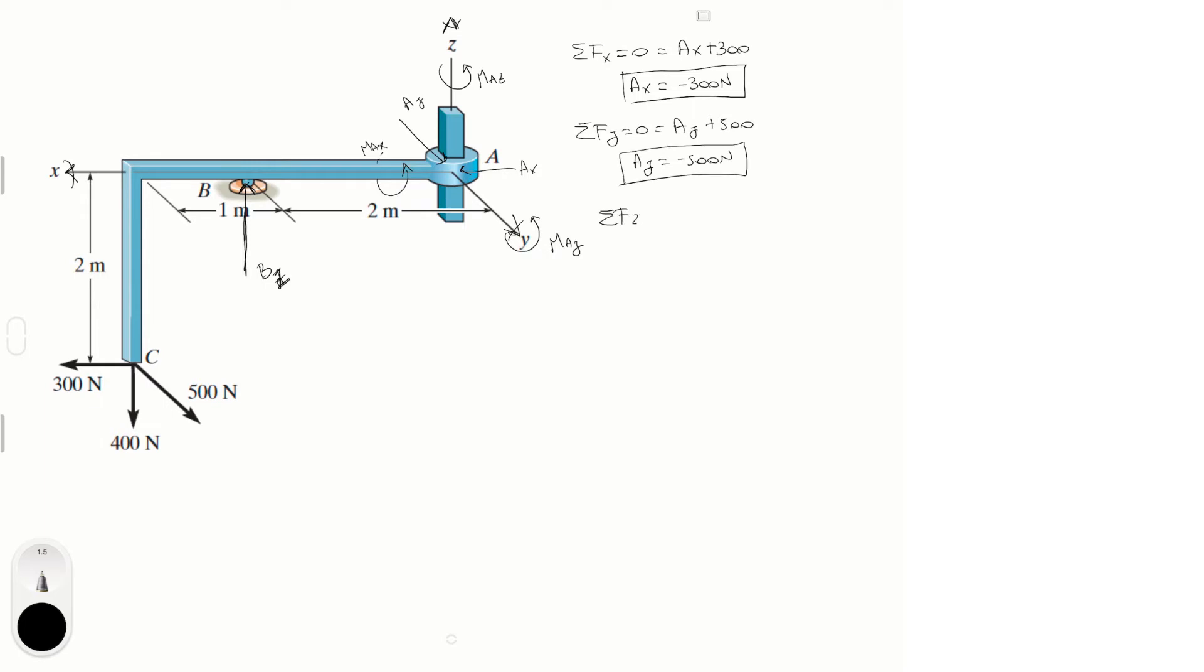Sum of the forces in the Z is equal to zero: minus 400 plus BC equals zero, so BC equals 400 newtons. Very easy so far, right? Now let's find the reactive moments, and with the moments you've got to be organized.